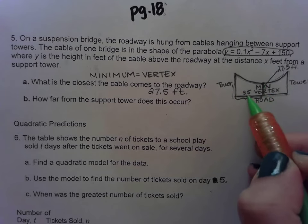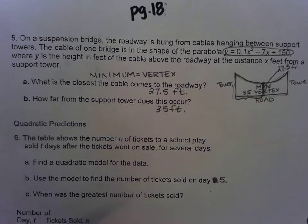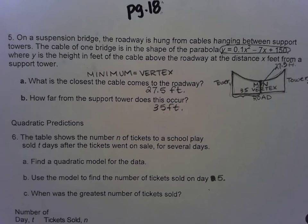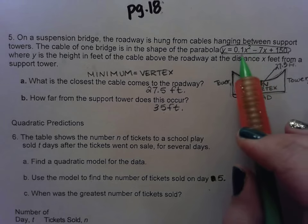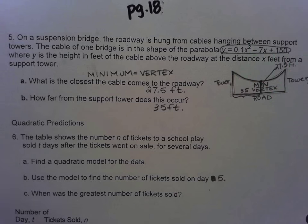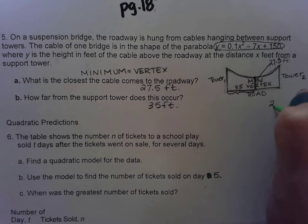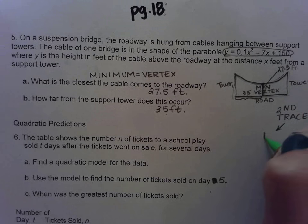So the closest the cable comes to the roadway is 27.5 feet — that's part a. For part b, how far from the support tower does this occur? That's the x-coordinate we just found: 35 feet. In word problems in this unit, you'll mostly be looking for vertices or x-intercepts. Just graph in y-equals, then use second trace to choose minimum or maximum.